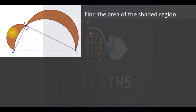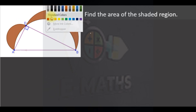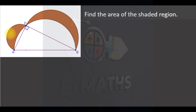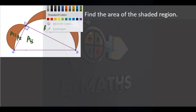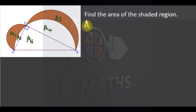Let's label the regions. We'll call this area A1, this small part A2, the area of the triangle A3, this region A4, and finally A5. So we have a total of five regions, and we want to find the sum of A1 and A5.